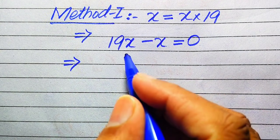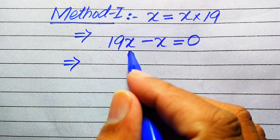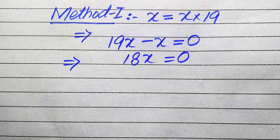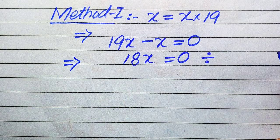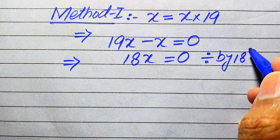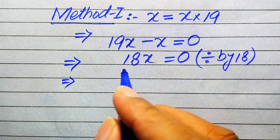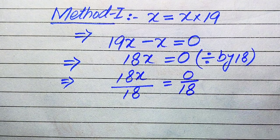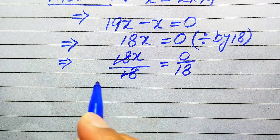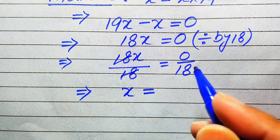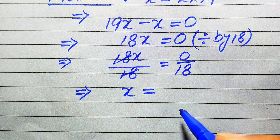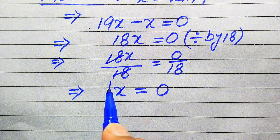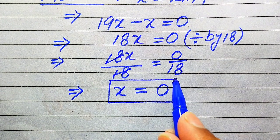Simplifying further, 19x minus x becomes 18x, and this equals 0. To solve for x, we divide both sides by 18. So 18x divided by 18 equals 0 divided by 18 — the 18s cancel, and we get x equals 0. In the first method, we get only one root: x equals 0.